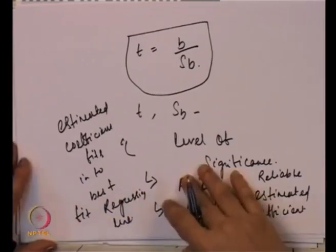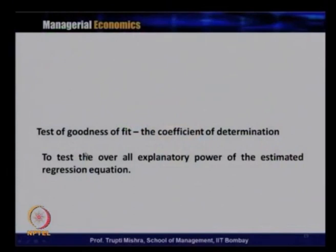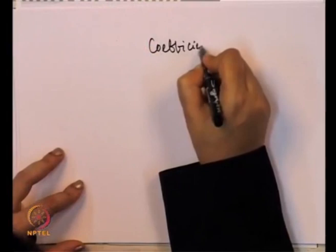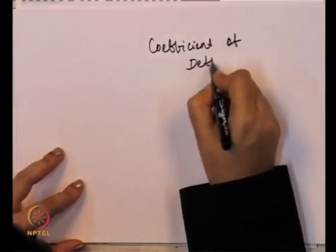Apart from the test of significance, there is also the test of goodness of fit, also called the coefficient of determination. It tests the overall explanatory power of the estimated regression equation or model — giving clarity and accuracy about whether the regression equation fits the best-fit regression line. To find the coefficient of determination, we use a specific formula.